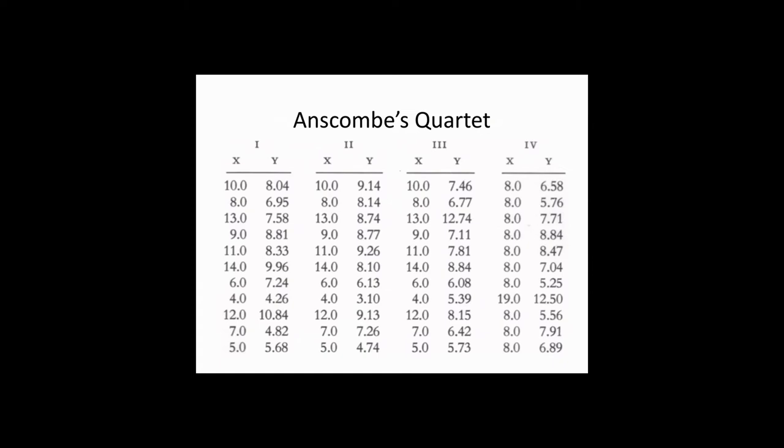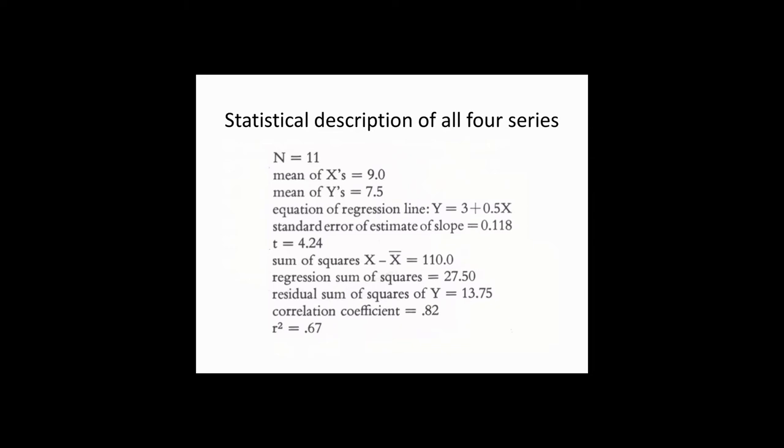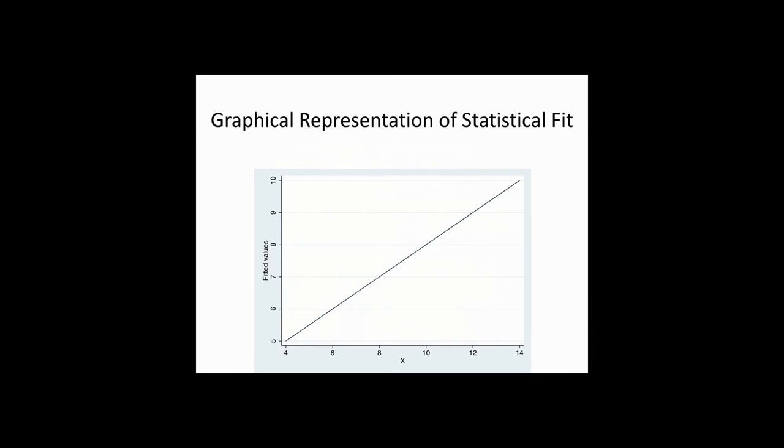But going back to Anscombe's Quartet, I'm going to tell you that all four of these things are statistically identical. And you're going to say, Dr. Tripp, you're insane. But all of them had an N of 11. All groups had a mean of X of 9 and a mean of Y of 7.5. All the groups had the same exact regression line. So the people who were arguing that precision is important, well, the problem is all four of those data sets come up with the same exact regression line, the same residual sum of squares, the same correlation coefficient, and the same variance explained. And so if you graph that, you're going to say, those four groups of data all look like this.